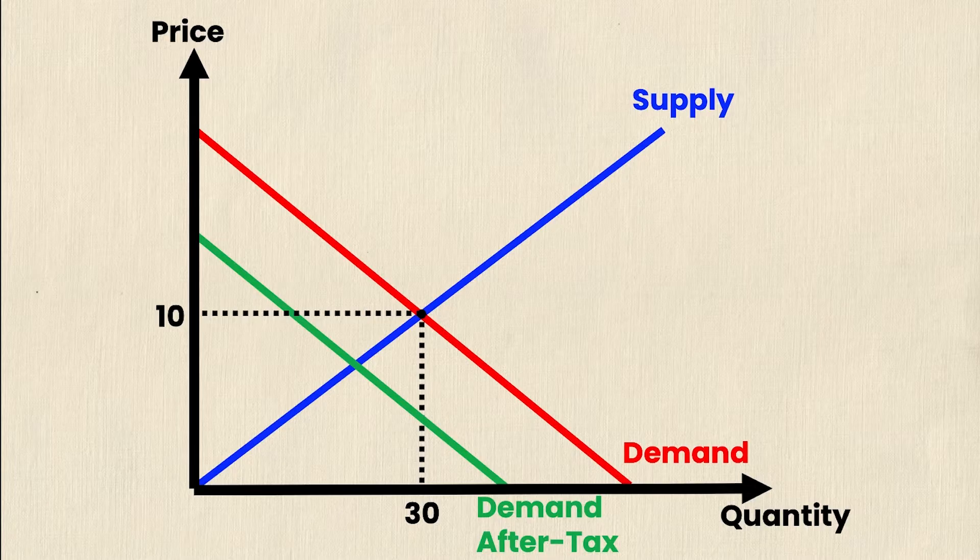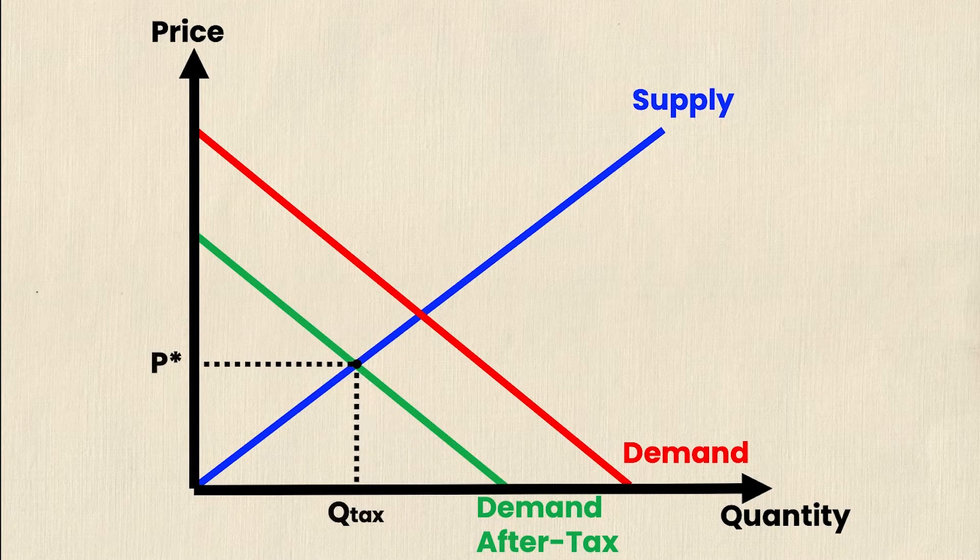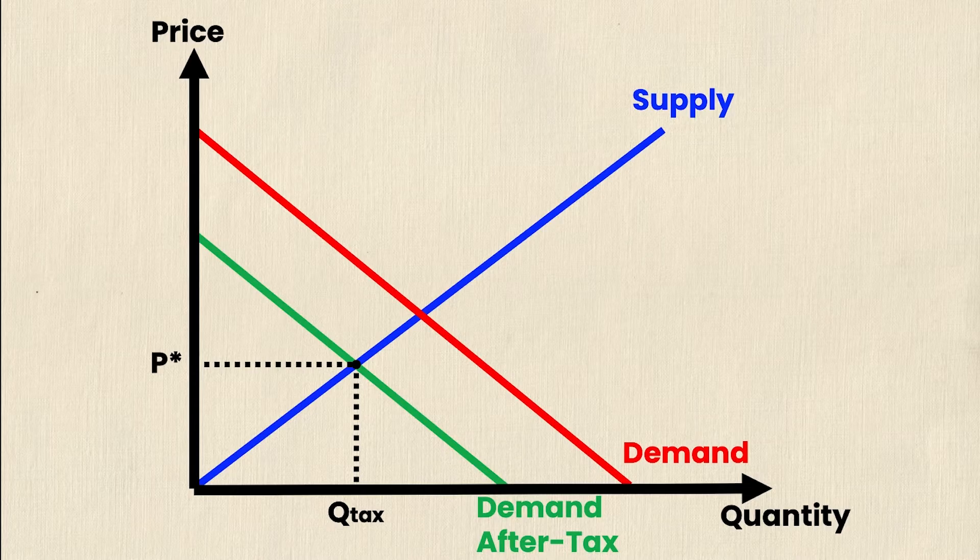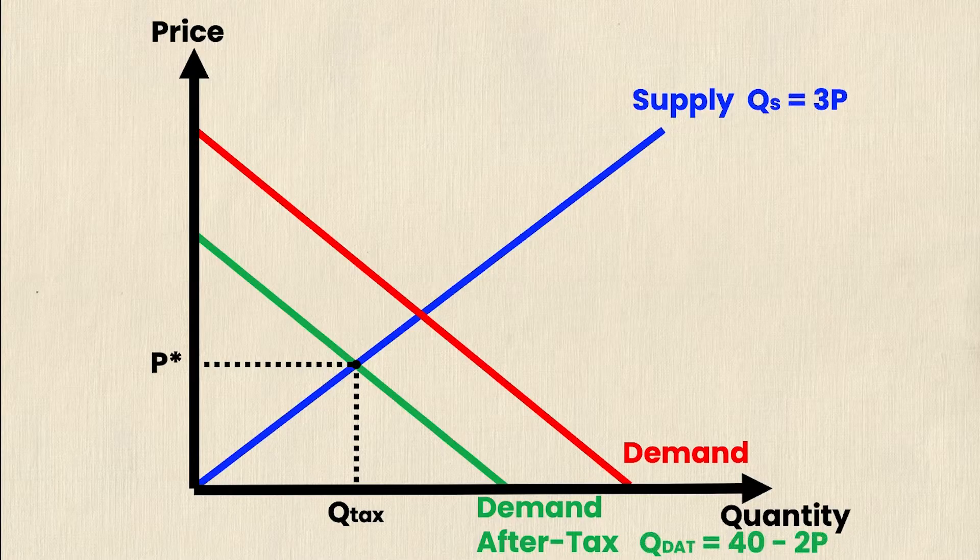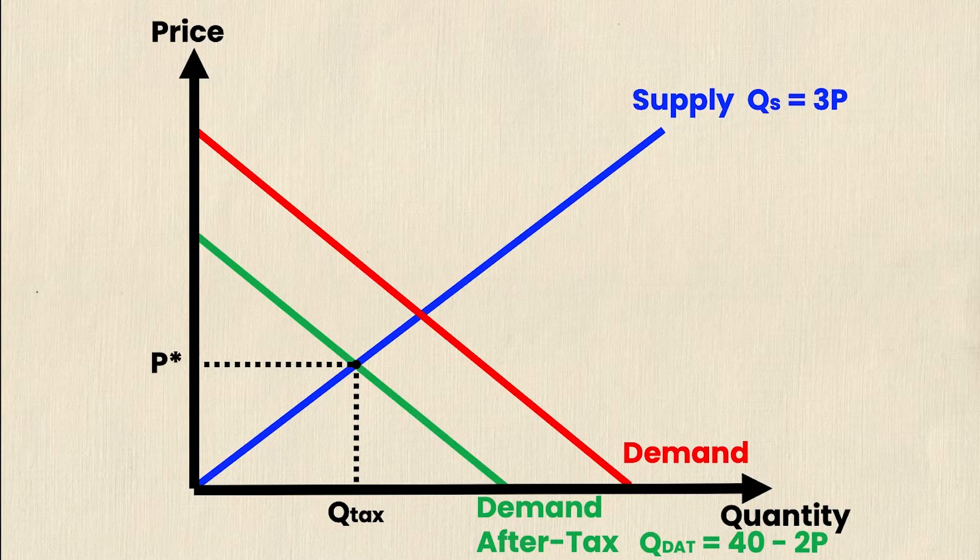However, now that I have a new demand curve, I also have a new equilibrium, which is down here at the new P star and Q tax. If I have a new demand curve, then of course, I must have a new demand equation as well. So let me take a look at what that is. My supply has not changed. It's still quantity supplied is equal to 3P. But as you can see, my green equation at the bottom, QDAT or quantity demanded after tax is equal to 40 minus 2P.